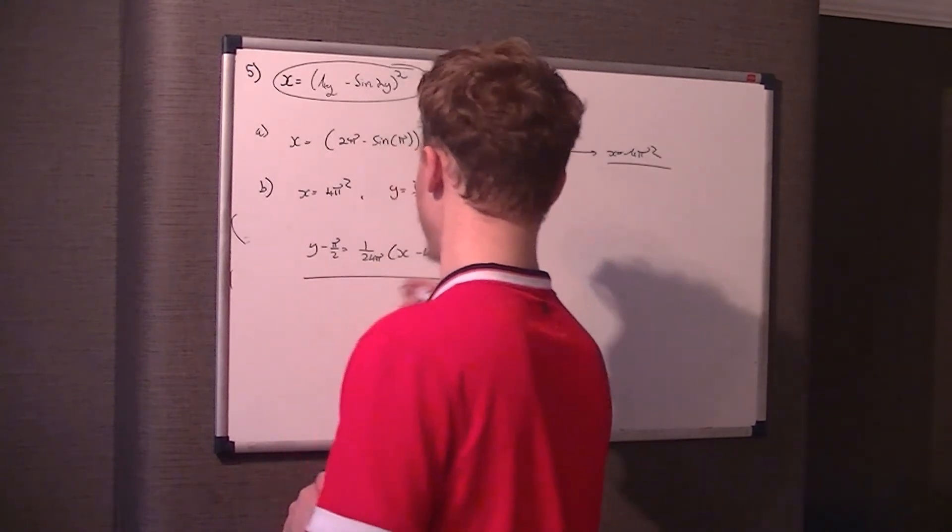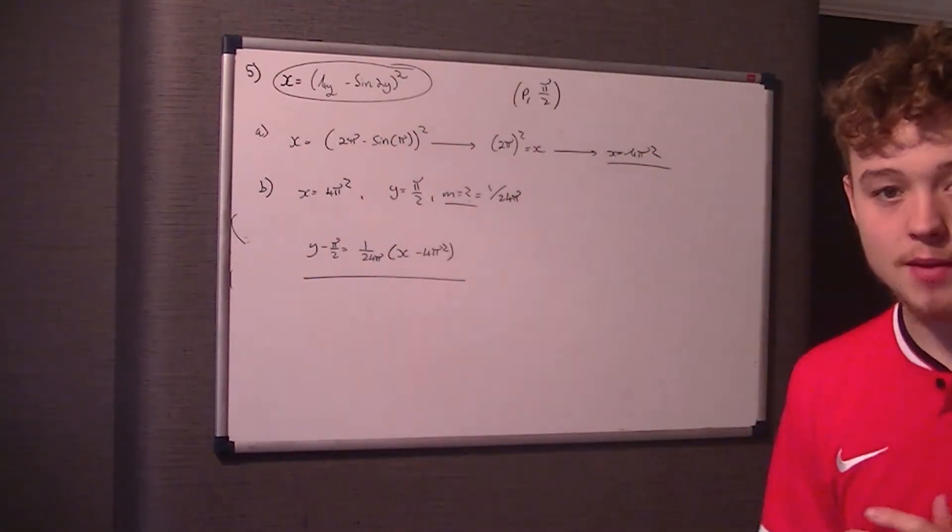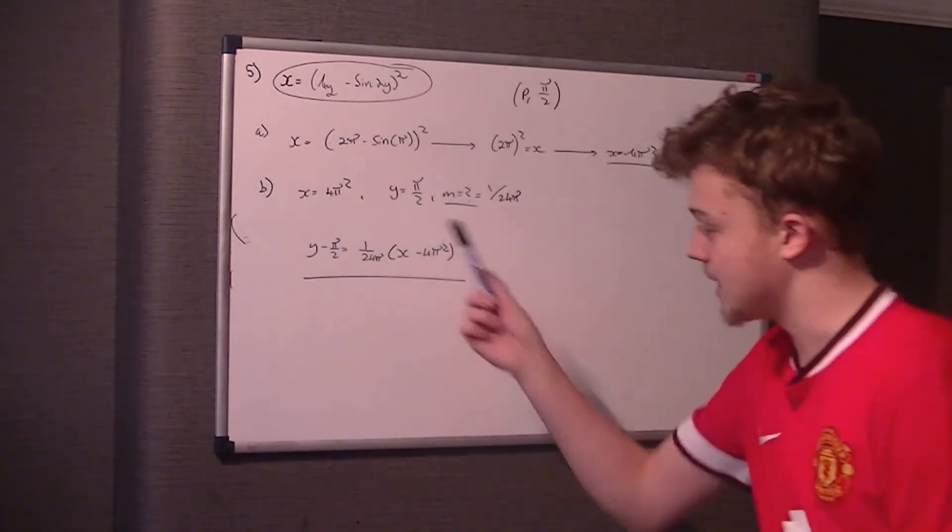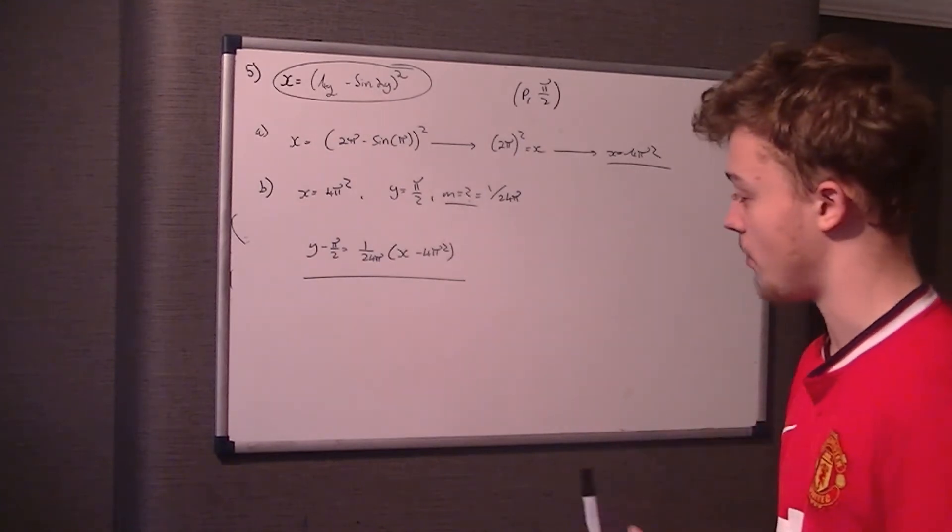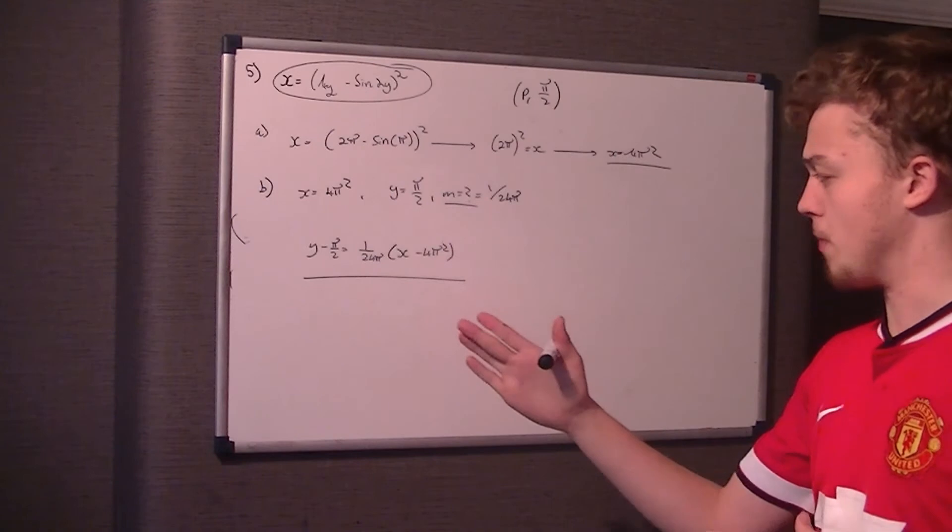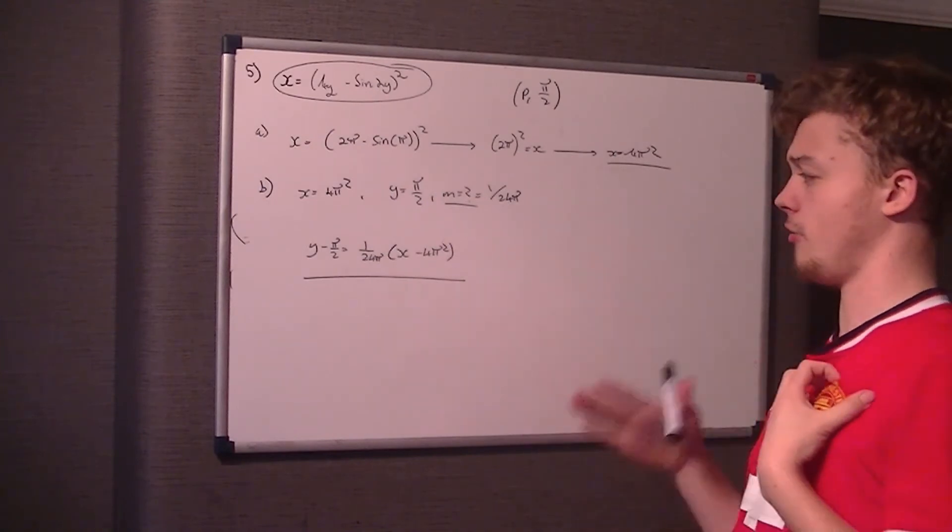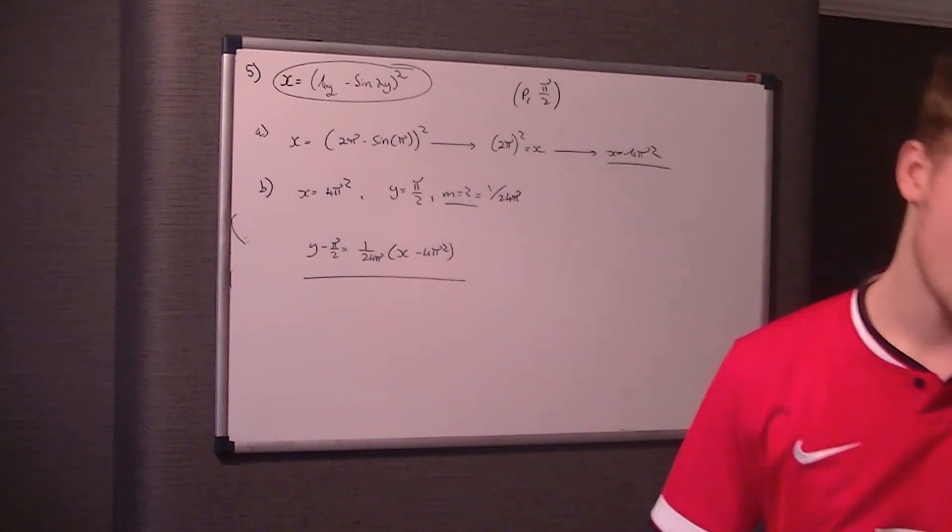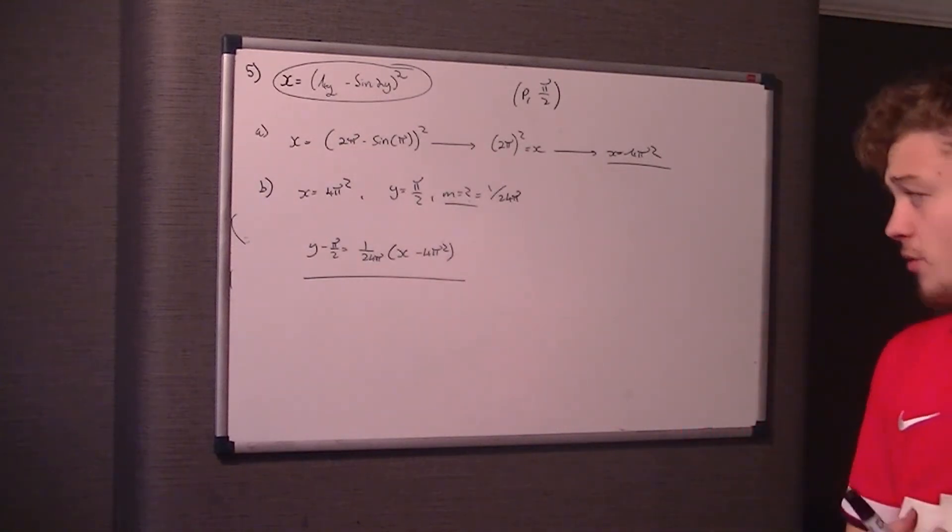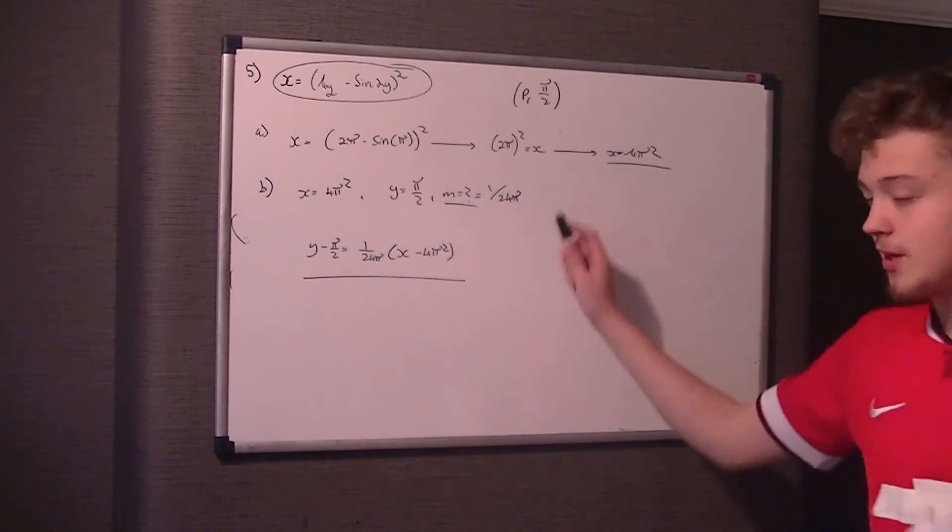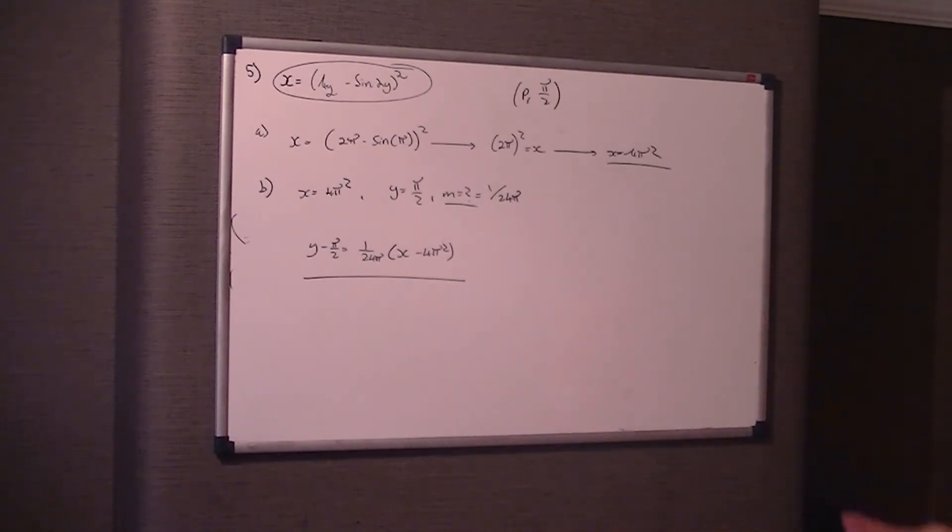Now, as we've not been asked to find the equation of the curve, you don't need to put it in the form y equals mx plus c. You're still following the standard way of working it out. So y take y1, which is y take pi on 2, equals 1 over 24 pi, brackets, x take 4 pi squared. Now the reason why we leave it in that form is because if we were to try and put it in the form y equals mx plus c, or any other variant for that matter, we'd be timesing it all by 24 pi, and that would be a bit of a nightmare. It's just an area that you can make a mistake in.